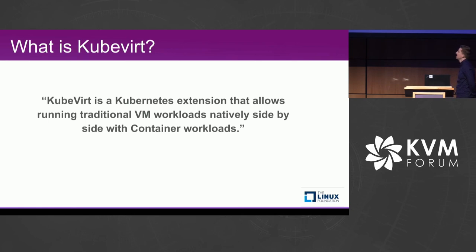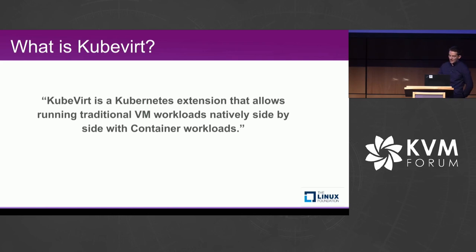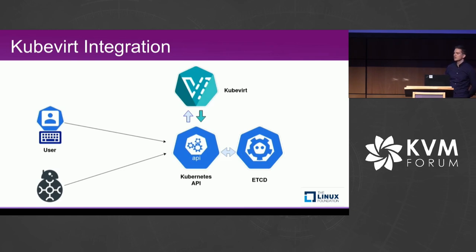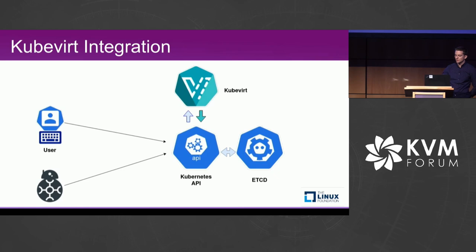So what is KubeVirt? KubeVirt is a Kubernetes extension that allows running traditional virtual machine workloads natively side by side with container workloads. If you are moving to containers but still need virtual machines, this is the project for you. KubeVirt hooks into the Kubernetes API, provides its own object called VirtualMachine, and uses webhooks to validate the schema. The user posts a VM spec to the API, which is then translated into a pod workload spec.